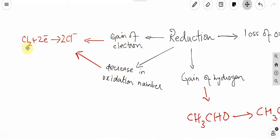For example: Cl₂ plus 2 electrons gives 2 Cl⁻. The oxidation number of Cl₂ was 0, and it goes to minus 1. So from 0 to minus 1, the oxidation number decreases, and electrons are gained. This means that chlorine is reduced.